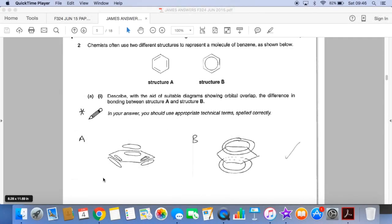So the diagram is first. Structure A, if you think about it as three separate carbon-carbon double bonds. So think about ethene. That's what you would draw for ethene. So we just draw three of those.